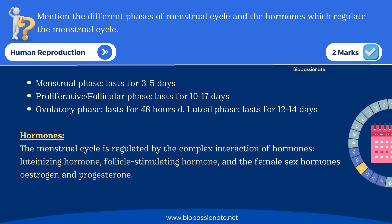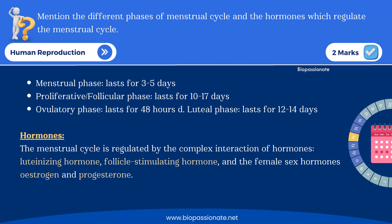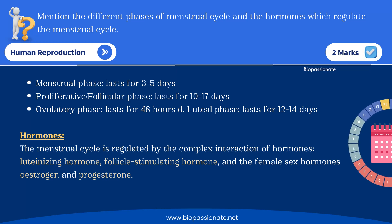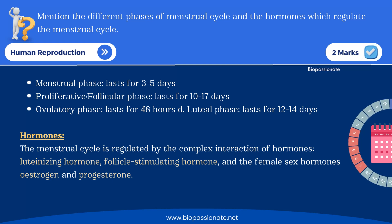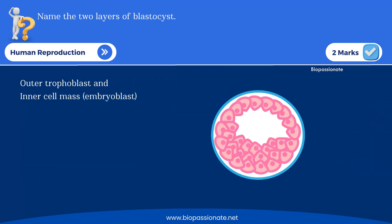Along with the phases, they ask about the hormones — remember four hormones: luteinizing hormone (LH), follicle stimulating hormone (FSH), estrogen, and progesterone. This question is very important because they will ask it for both two marks and five marks. Also: name the two layers of blastocyst — outer trophoblast and inner cell mass.